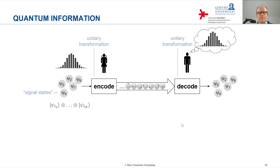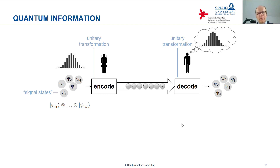So there are various important differences from the setup for conveying classical information. We no longer have a classical random experiment but random generation of pure quantum signal states, and we no longer have preparation and measurement but unitary transformations.